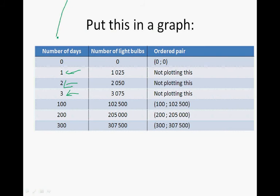So when I draw my X and my Y axis, the number of days is my independent variable. And that will go on the X axis, on the horizontal axis. And because the amount of bulbs is dependent on the amount of days that you manufacture, that will go on to my vertical axis. So this axis here will be the amount of bulbs, and this axis here will be the number of days.